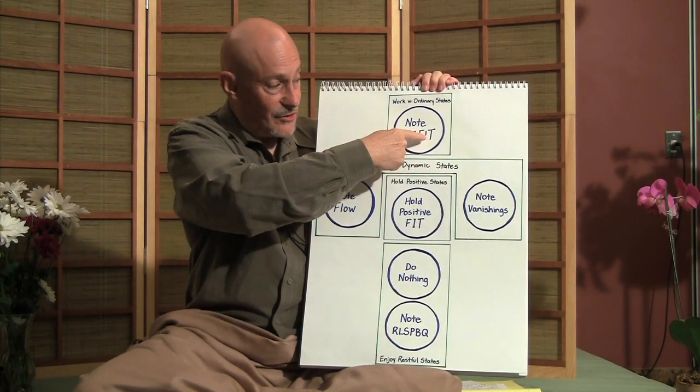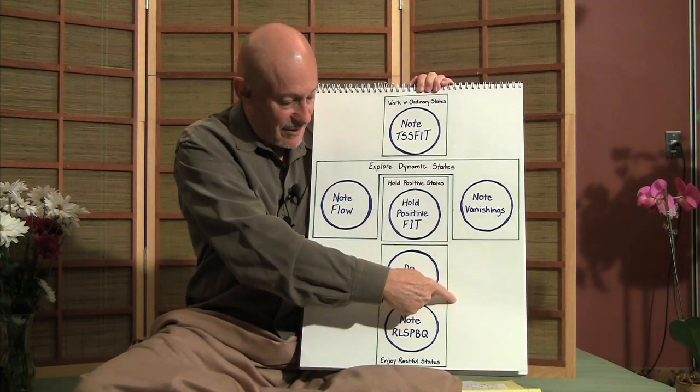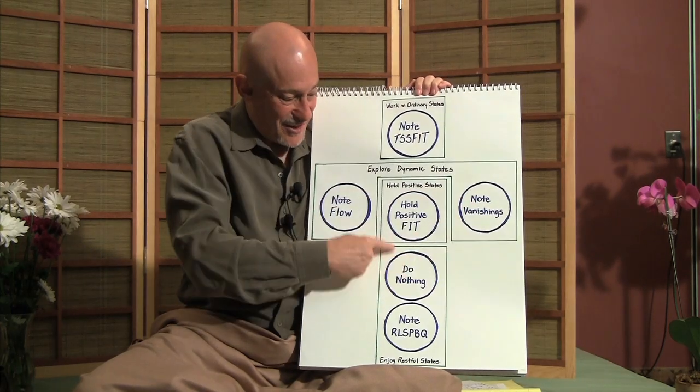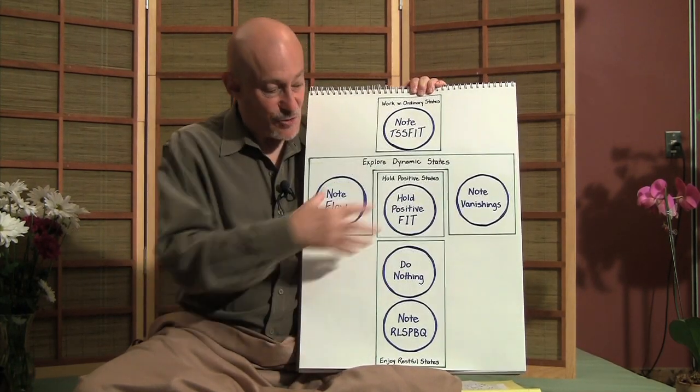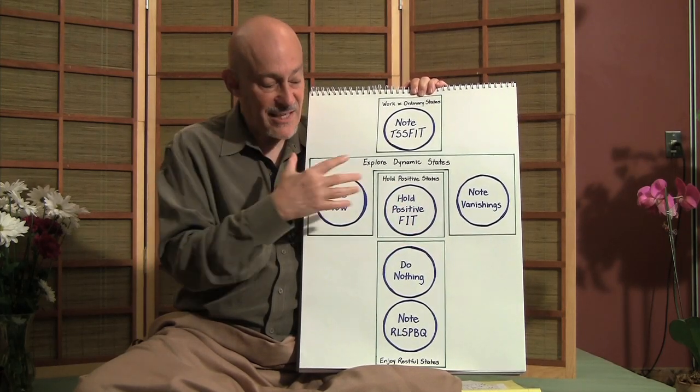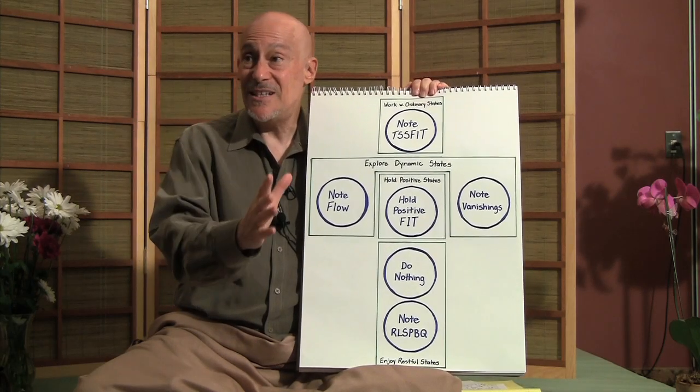So the one I just showed went ordinary, rest, flow, vanishing, do nothing, positive, and then you can go back to ordinary. And this was designed to make it easy for a person to interactively guide you.